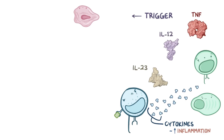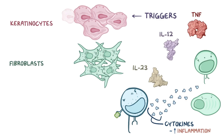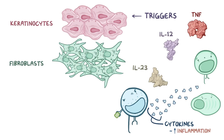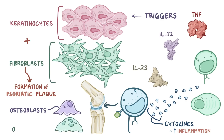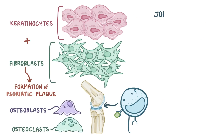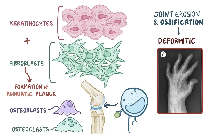This triggers keratinocytes and fibroblasts to proliferate and leads to formation of a psoriatic plaque. In some individuals with psoriasis, T cells also go to the joints and trigger activation of osteoblasts and osteoclasts, leading to joint erosion and ossification, which can ultimately cause deformities.